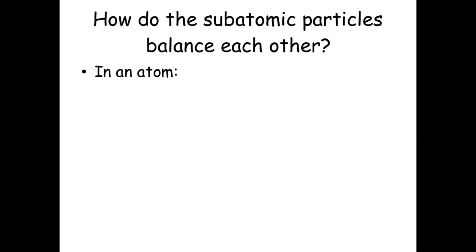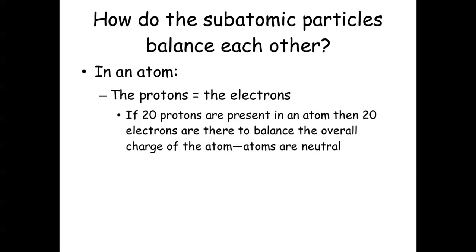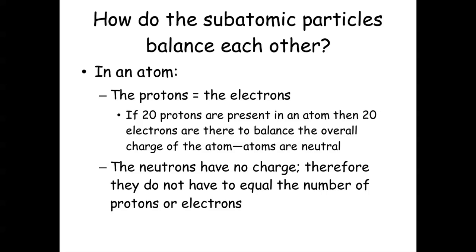So how do they balance each other out? In an atom, the number of protons has to equal the number of electrons. So if there are 20 protons in an atom, then 20 electrons have to be there to balance the overall charge of the atom. Atoms are neutral — they have a charge of zero. Neutrons have no charge, therefore they do not have to equal the number of protons or electrons. The neutron number isn't as strict as the proton and electron numbers, which have to match.